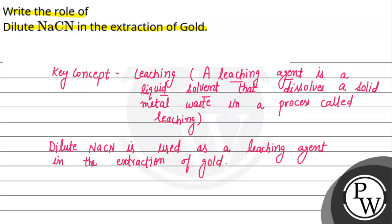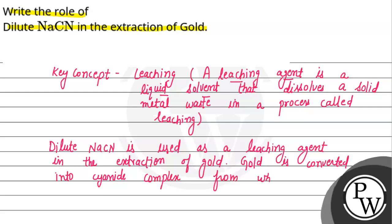Gold is converted into a cyanide complex, from which the metal is extracted later.